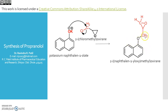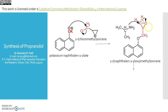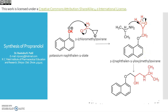This gives the ether of chlorohydrin, which when reacted with propanamine, allows the nitrogen to attack on the electron-deficient carbon to open the epoxide ring and obtain the desired compound — propranolol.